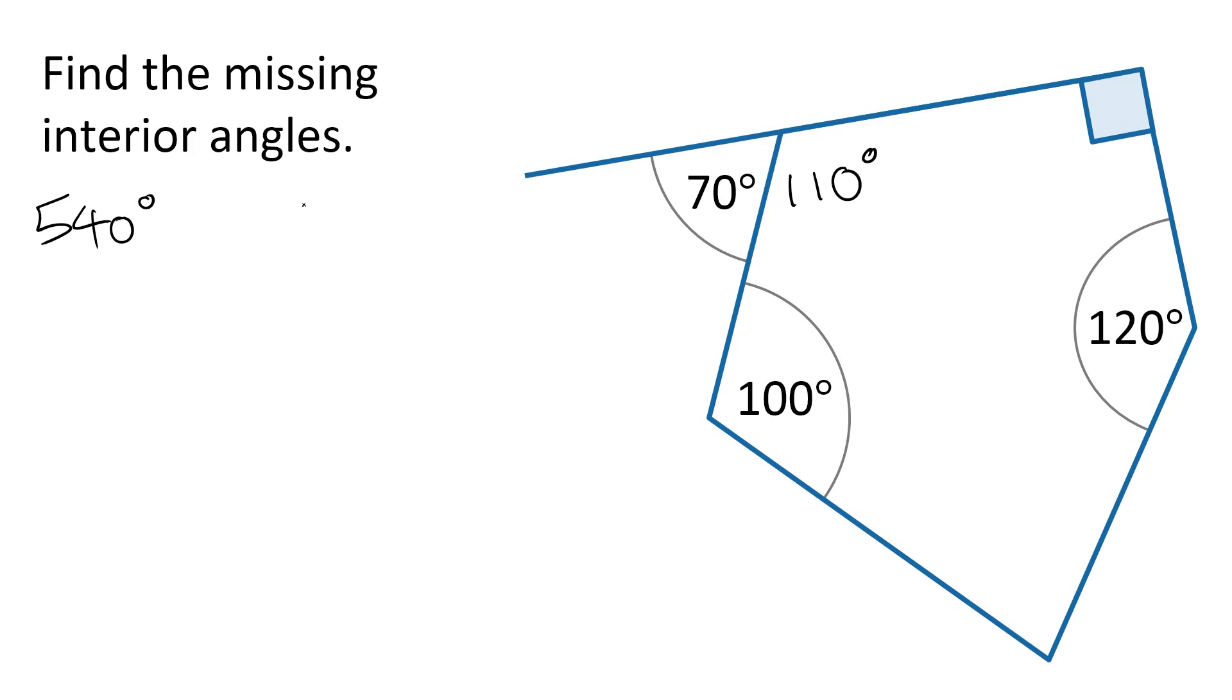Remembering that the total interior angle of an n-sided polygon is 180 multiplied by n minus 2. So again, n is the number of sides here, so that's 5 minus 2 is 3, and 180 times 3 is going to give us that 540 degrees that we've got there.